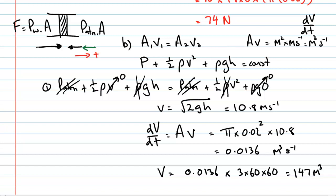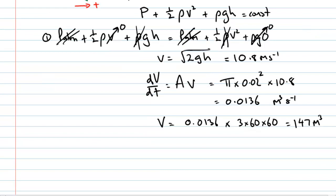To check: waiting longer increases the time, giving more volume. Increasing the aperture increases the area, raising the volume flow rate, so more water would leave the dam — both make intuitive sense. To test your understanding of hydrodynamic systems, try problem 57 of chapter 15, which will help cement your understanding of Bernoulli's principle.